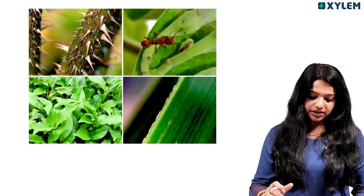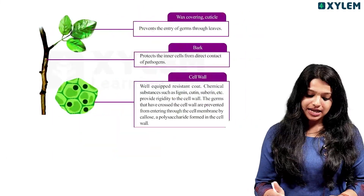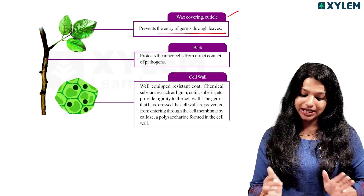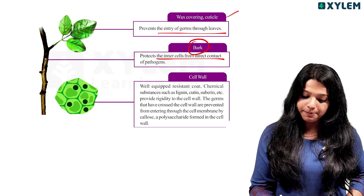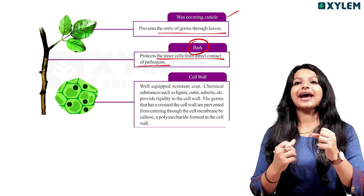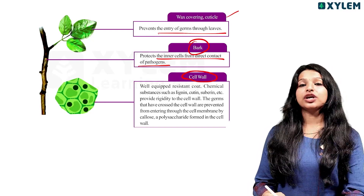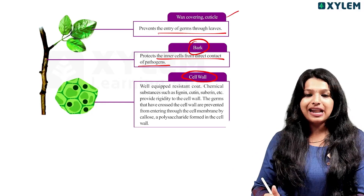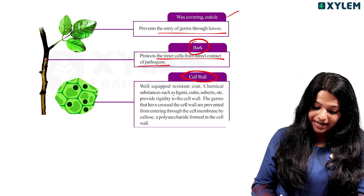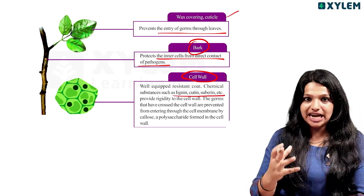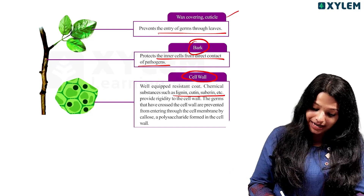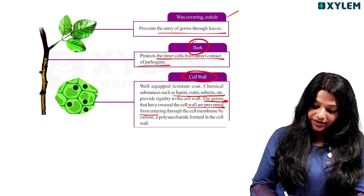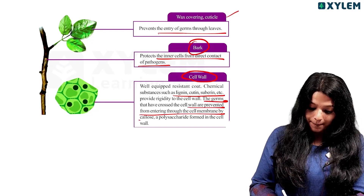We are learning about the various defense mechanisms. We are talking about wax covering cuticles — to prevent the entry of germs through the leaves. We are talking about bark — to protect the inner cells from direct contact with the pathogen. That is why we are discussing the cell wall, with lignin, cutin, suberin, and other components, meaning that germs crossing the cell wall are prevented from entering through the cell membrane.